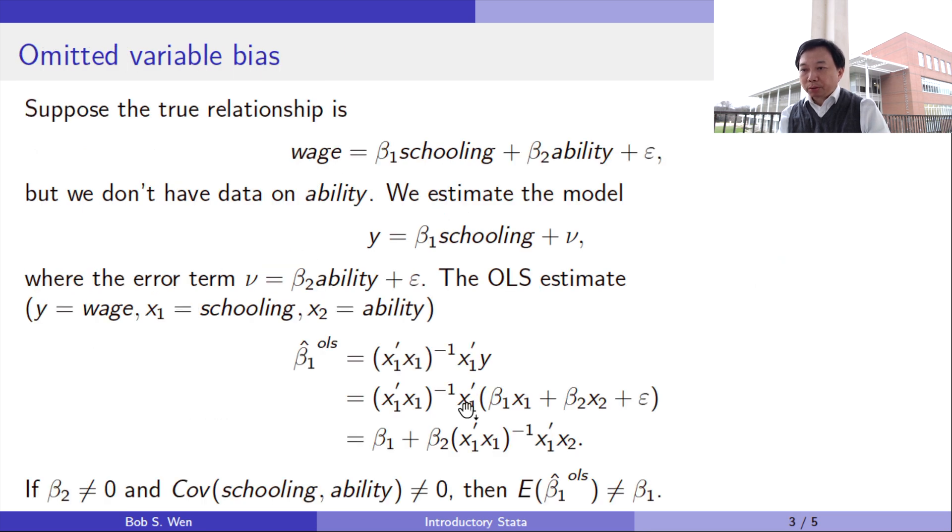Let me show you the omitted variable bias. Suppose the true relationship is that wage is related to schooling and ability. However, the latent ability is unobservable.